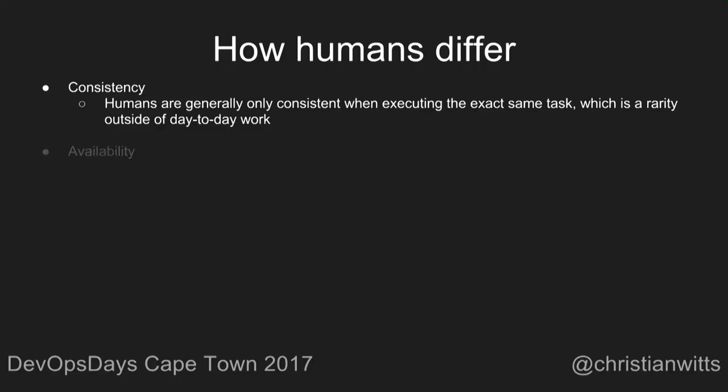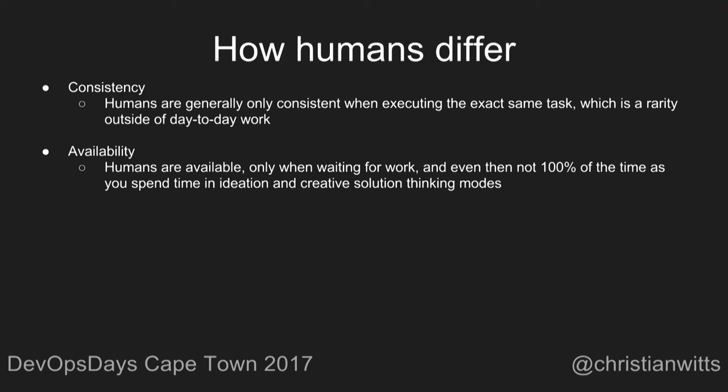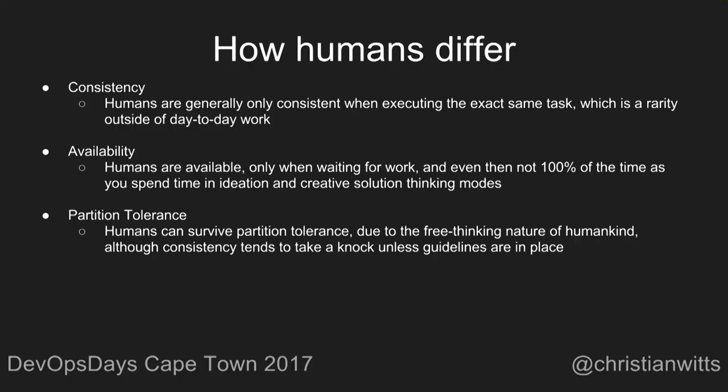Humans are an entirely different beast — mostly able to operate independently due to superior partition tolerance because we're independent free thinkers, but we tend to suffer a lot more from consistency and availability. Humans are generally only consistent when executing the same task, which is a rarity outside of day-to-day work. Introduce a slight variance and the outcome can be wildly different. Humans are generally available but only when waiting for work, and even then not 100% of the time — you spend some time in the ideation phase or, to be honest, watching cat videos and surfing Reddit.